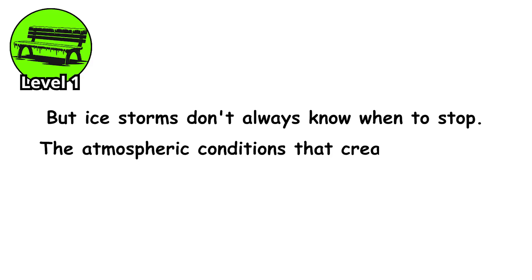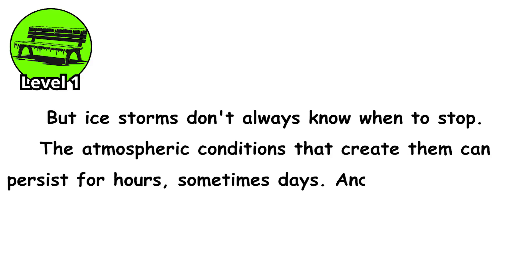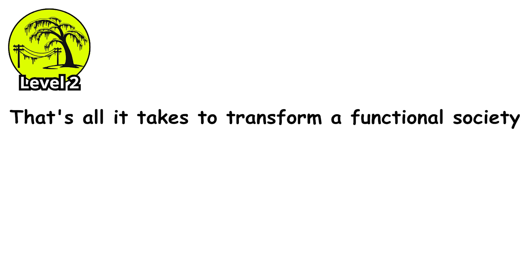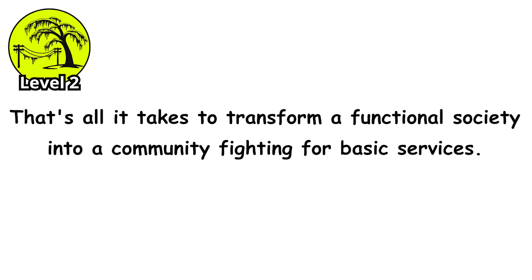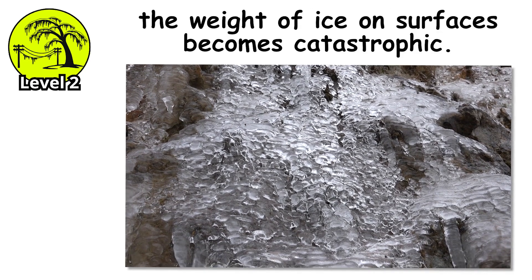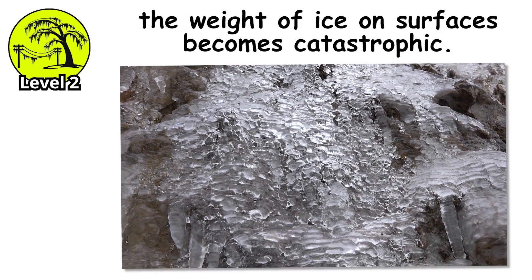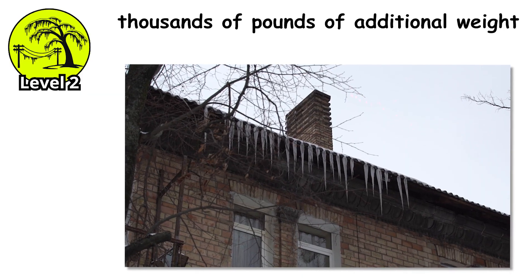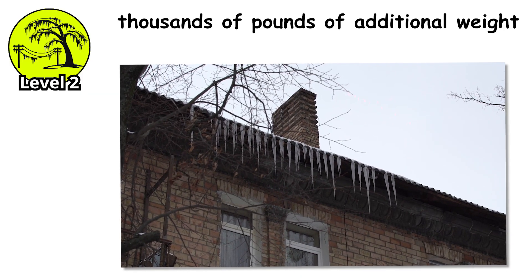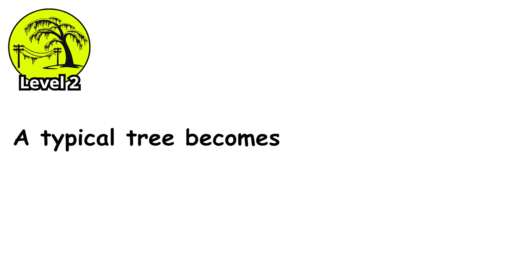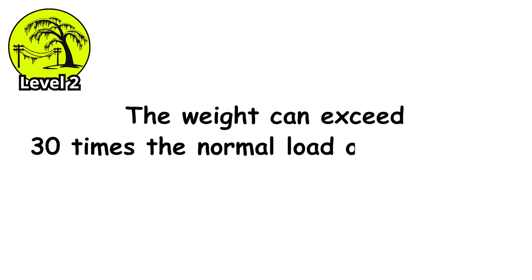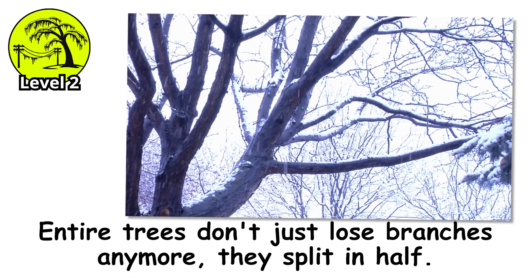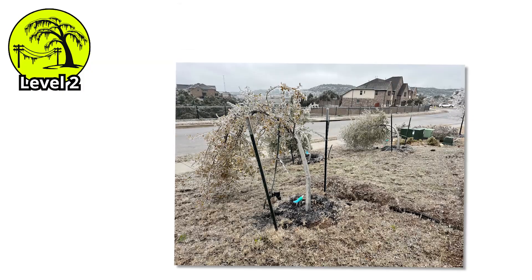The atmospheric conditions that create them can persist for hours, sometimes days. And when they do — Level 2. One inch of ice. That's all it takes to transform a functional society into a community fighting for basic services. At this accumulation level, the weight of ice on surfaces becomes catastrophic — thousands of pounds of additional weight on structures never designed to bear such loads. A typical tree becomes a ticking time bomb coated in an inch of ice. The weight can exceed 30 times the normal load on branches. Entire trees don't just lose branches anymore — they split in half. Mature oaks, maples, pines that have stood for decades suddenly tear themselves apart from the inside out.